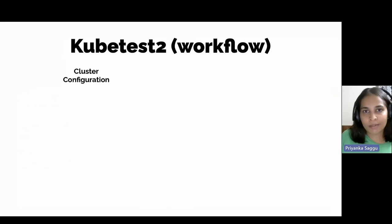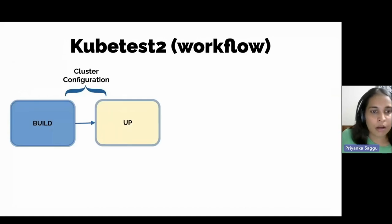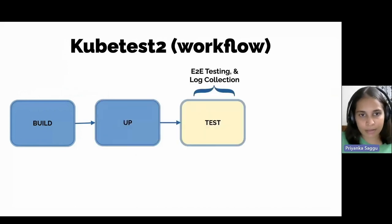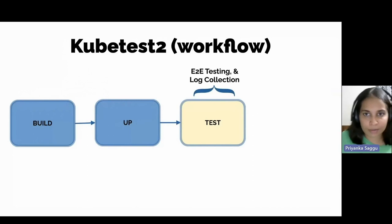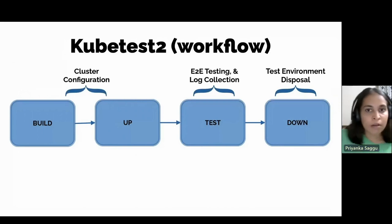We do all of this across four different steps of kubetest2. The first is the build step, where kubetest2 helps us build binaries from source code. Then we have the up phase, where kubetest2 uses the newly built binaries to spin up a new test Kubernetes cluster. Using various kubetest2 plugins, we then perform end-to-end testing while kubetest2 collects logs. Finally, when we are finished with our testing requirements, it helps us spin down or decommission the test environment.